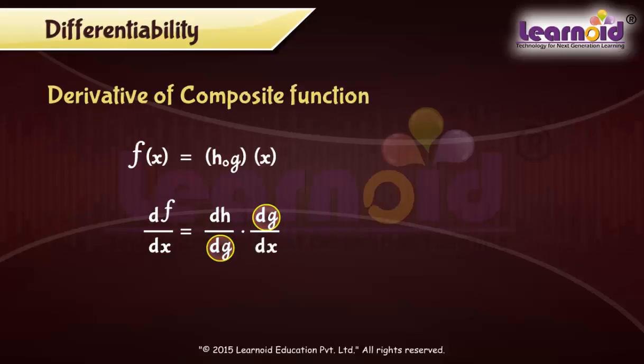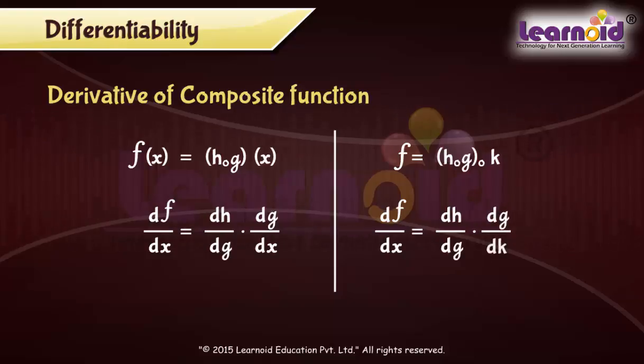This can be extended to three functions. F is composite function of h and g with respect to q. Then df/dx equals dh/dg multiplied by dg/dk multiplied by dk/dx. This is known as chain rule and can be extended to any number of composite functions.